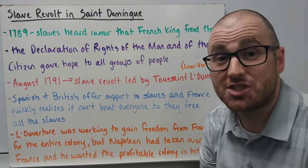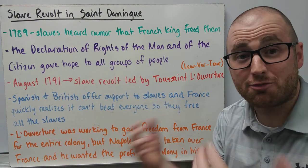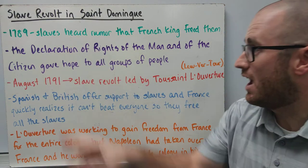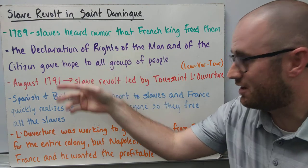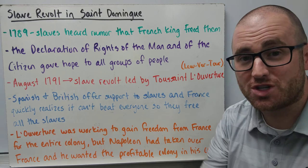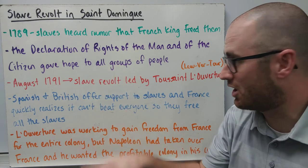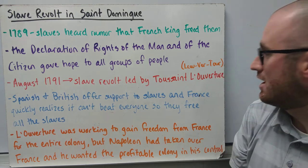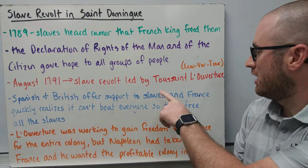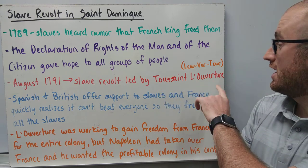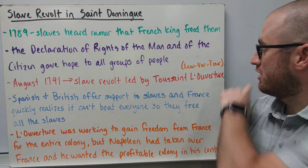This all led to a slave revolt in San Domingo. In 1789, slaves heard rumors that the French king had freed them, and they got wind of the Declaration of Rights of the Man and of the Citizen — the French Revolution's declaration — which gave hope to all four groups. In August 1791, there was a slave revolt led by Toussaint Louverture.